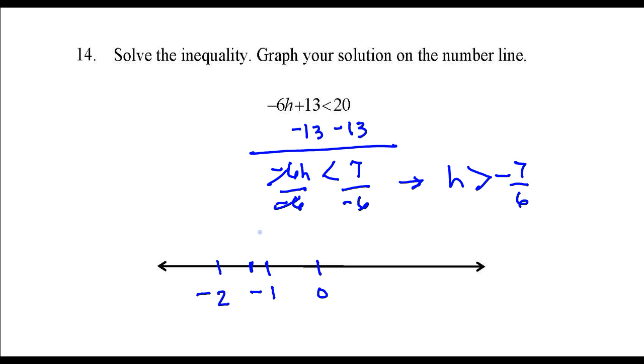So the solution is all numbers that are greater than negative 7 over 6, that's everything to the right of negative 7 over 6.